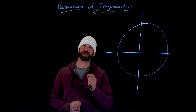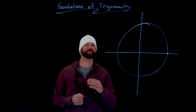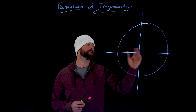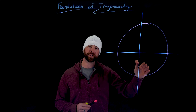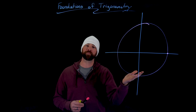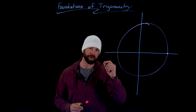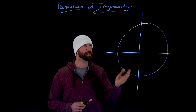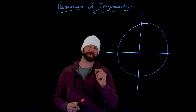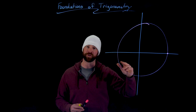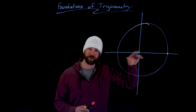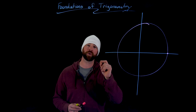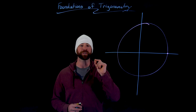Next, let's talk about coterminal angles. This is a pretty simple concept once you get the basics. The idea is that as we turn around the circle — if we allow angles bigger than 360 or less than zero, negative angles — many angles end up at exactly the same spot around our circle. They might have gone around more times, but the ending location is the same. We call those angles coterminal.